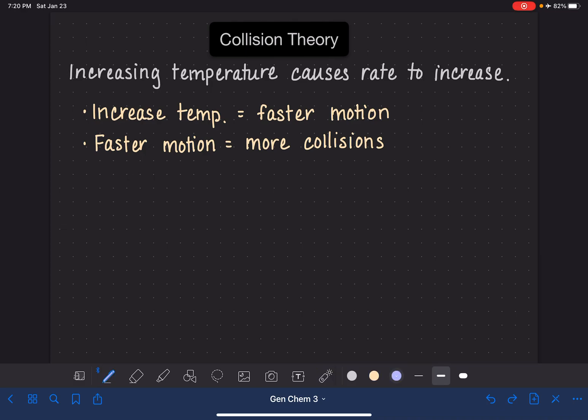Most collisions between two molecules actually don't result in a chemical reaction. In order for a chemical reaction to occur, the molecules need to have what we call a good collision. There are two criteria for being a good collision, and a good collision is what's necessary or what will ultimately result in a chemical reaction.